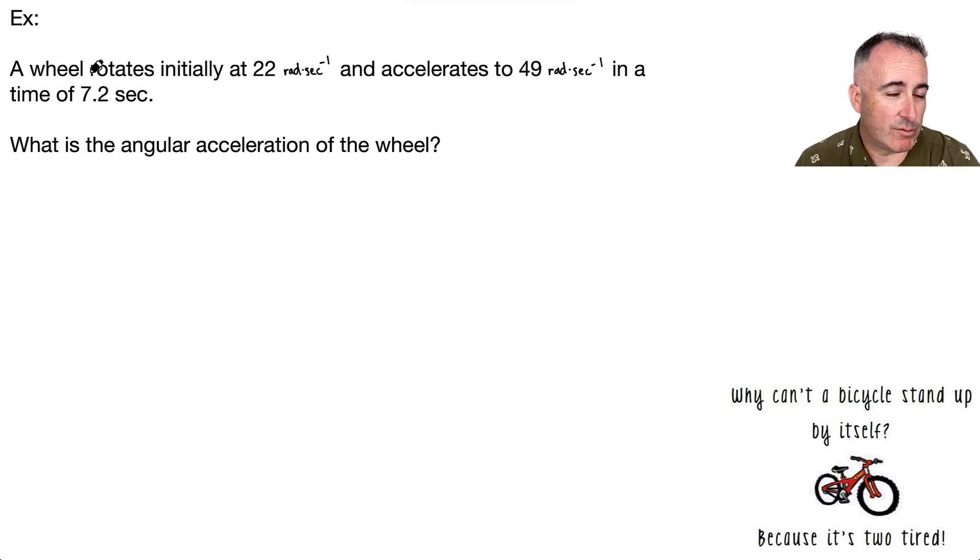All right, we have a wheel that rotates, and its initial angular velocity is this, and it accelerates to this angular velocity. So first of all, what are the variables? If you're not used to this stuff, let's just label them. So this is omega i. That's the initial angular velocity. This is omega f. And the time, well, that's just t.